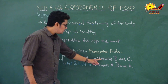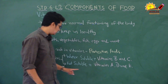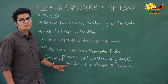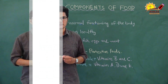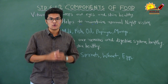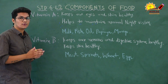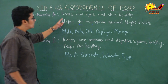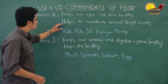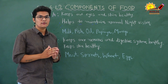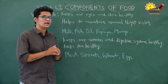Vitamin B and C are water-soluble vitamins, and vitamins A, D, and K are fat-soluble. Now let's see the functioning and sources of vitamins. Vitamin A keeps our eyes and skin healthy and helps maintain normal night vision.